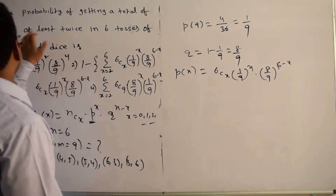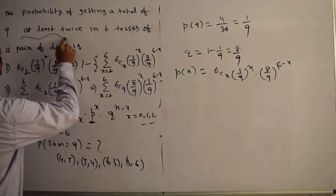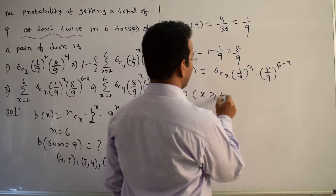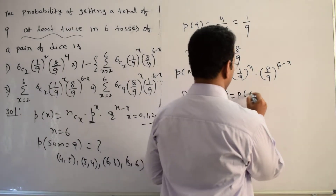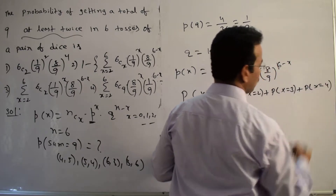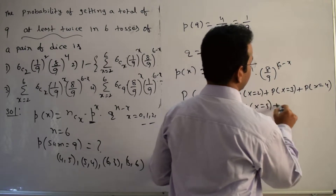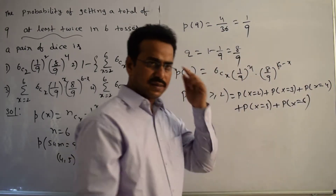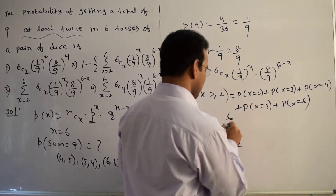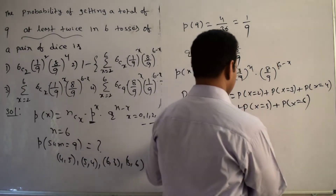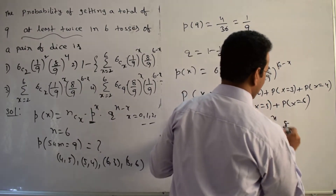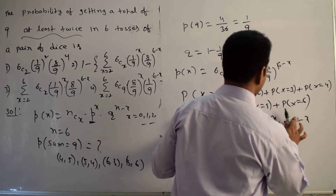What we need to calculate is: getting a total of 9 at least twice in 6 times, which means P(X ≥ 2). This equals P(X=2) + P(X=3) + P(X=4) + P(X=5) + P(X=6), which can be written in summation form as: Σ from x=2 to 6 of 6Cx · (1/9)^x · (8/9)^(6−x).